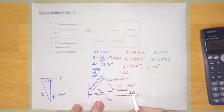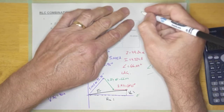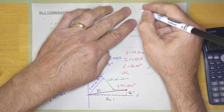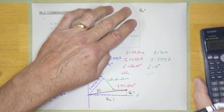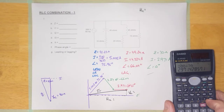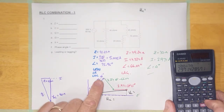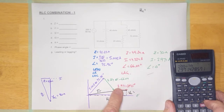We're going to calculate the vertical component and the horizontal component. The horizontal component is going to be: phasor 1 cosine its angle, plus phasor 2 cosine its angle, plus phasor 3 cosine its angle.